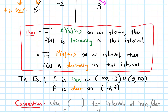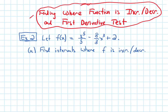The key fact from our last video was that if our derivative is positive, then our function is increasing, and if our derivative is negative, then our function is decreasing. So to figure out where our function is increasing and decreasing, we need to find where the derivative is positive and where it's going to be negative.